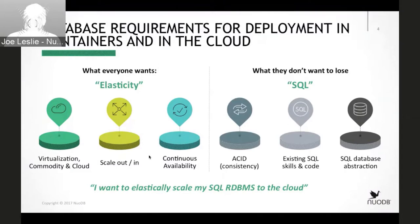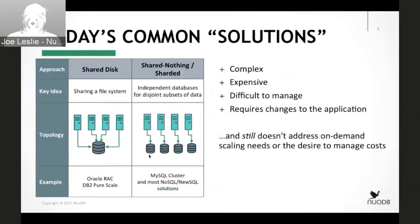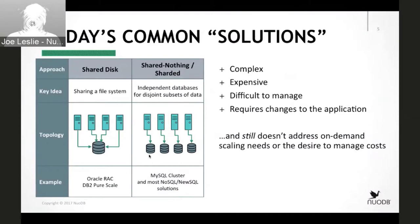When we look at common solutions, this next slide shows some of the approaches that have been taken. Either a shared disk solution — which can be very complex and expensive when you consider clustering software and shared disks, examples being Oracle RAC and DB2 Pure Scale — or a shared-nothing or sharding approach, which also has challenges requiring applications to have more knowledge about where to get the data. While these solutions exist, none are truly meeting all the desired requirements.